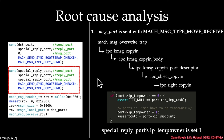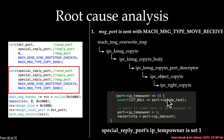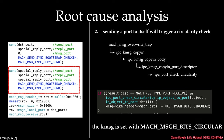The first thing is that this send is using mach_msg_type_move_receive, and that leads down this control flow path. The important part they call out is that they want to make sure it sets IP_temp_owner equal to one — that's going to matter later on for a different control flow path.